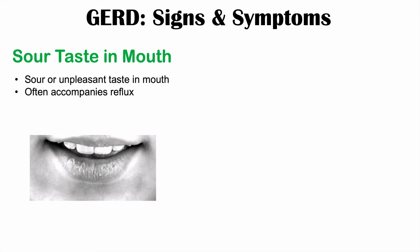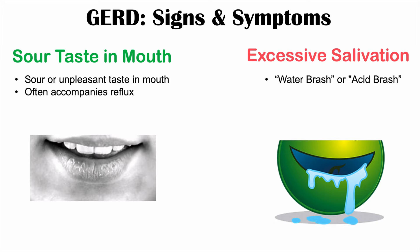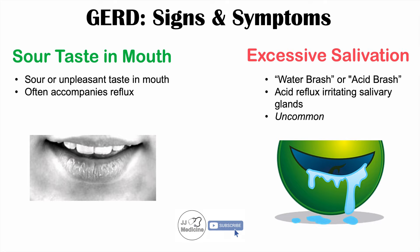Some individuals with GERD can experience excessive salivation, known as water brash or acid brash, which may be due to acid reflux irritating salivary glands — though this is an uncommon symptom. Interestingly, individuals with GERD can also have dry mouth, so either too much or too little saliva production can occur with GERD.